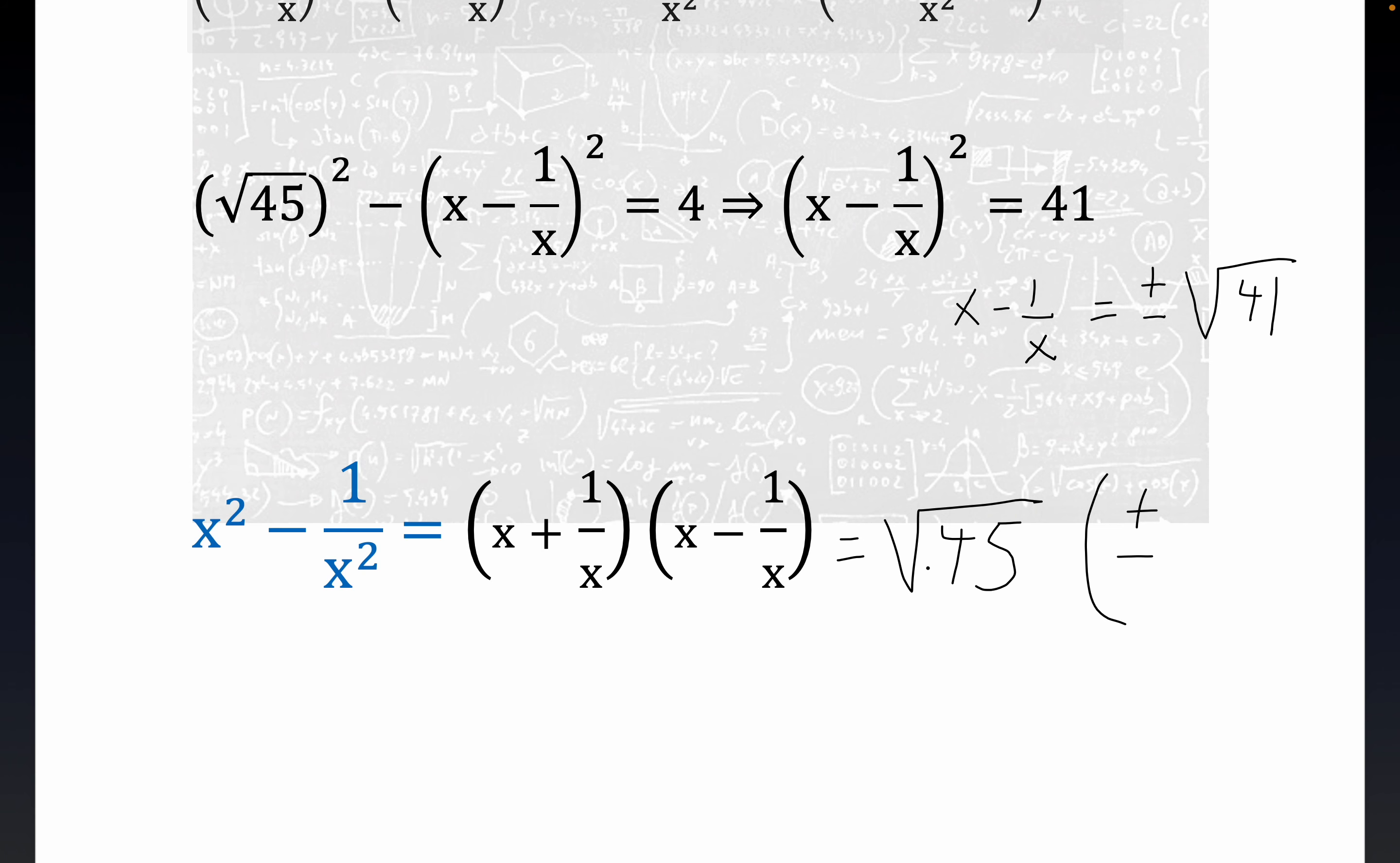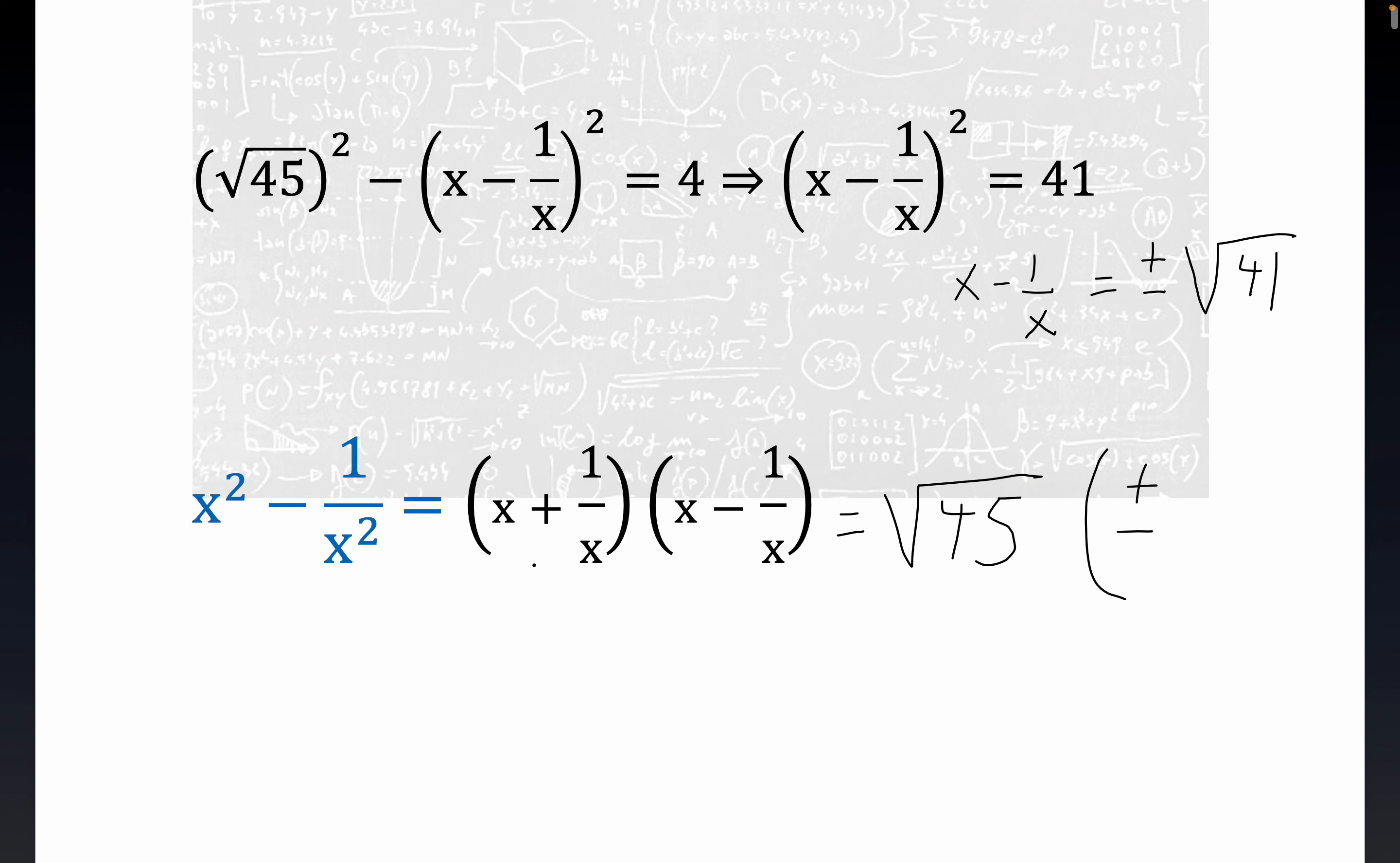If x plus 1 over x is equal to the square root of 45, if you take a look at this graph, it's symmetric about the origin, it's not one to one. And so you end up with two solutions to this. And so what we have here is two solutions to this, I think, unless I'm making a mistake. And you guys, please share, let me know. But I think, I think it's correct.